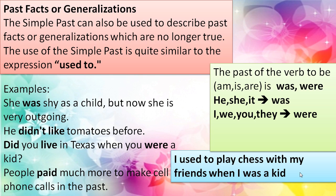More examples: 'She was shy as a child, but now she's very outgoing.' Outgoing is the opposite of shy — it means she likes to talk and make friendships. 'He didn't like tomatoes before.' 'Did you live in Texas when you were a kid?' — 'Yes, I did.' / 'No, I didn't.' 'People paid much more to make cell phone calls in the past, but now they use the internet and don't have to pay that much.' 'I used to play chess with my friends when I was a kid.'